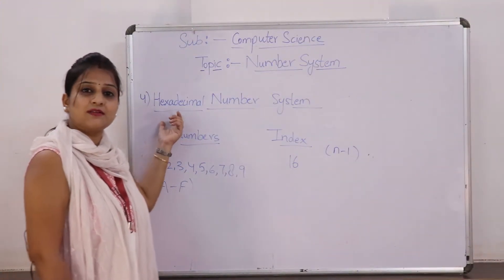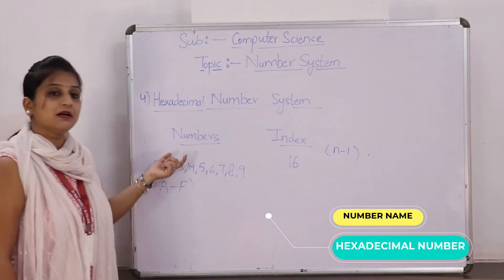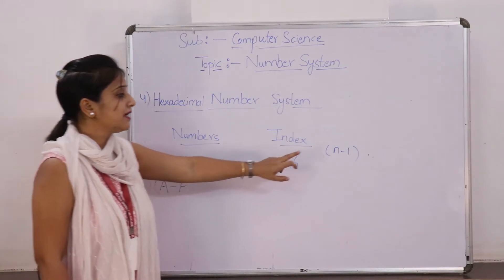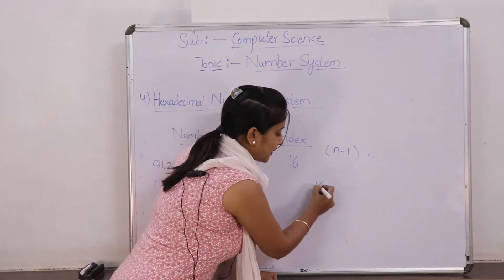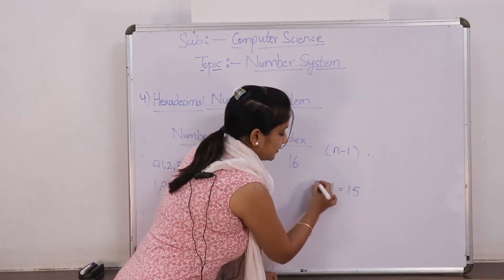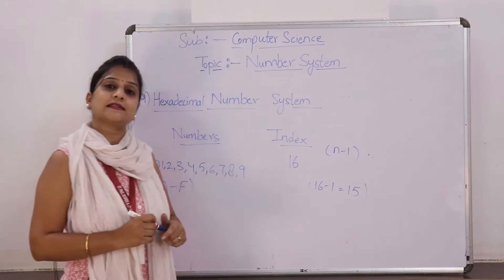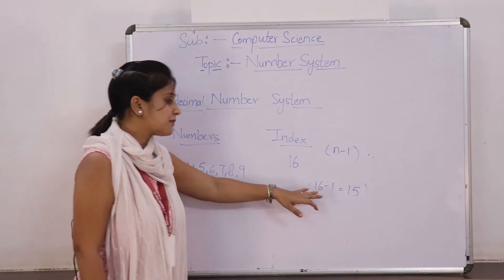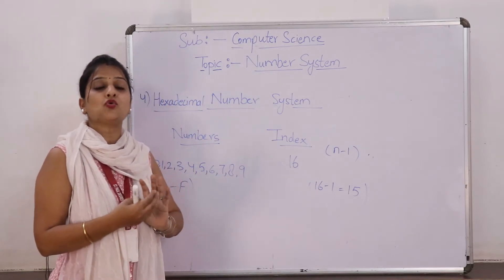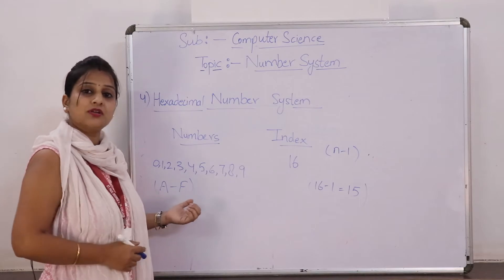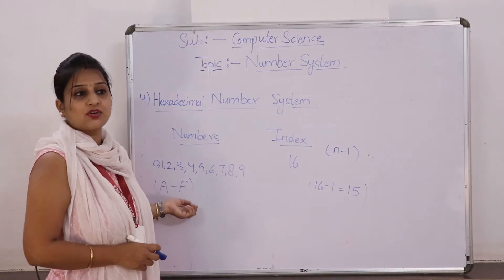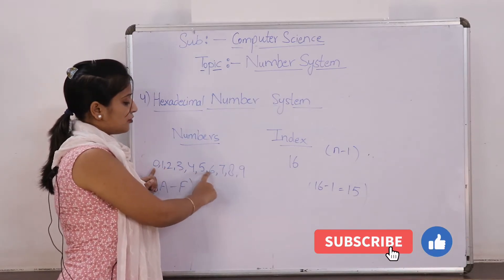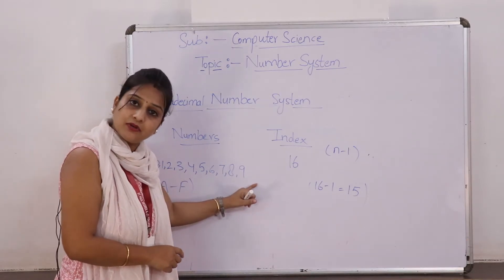The last number system is the hexadecimal number system. Here the index number is 16. Using n-1: 16-1 equals 15. Now the question arises — as we said, we don't have single-digit numbers beyond 0 to 9, so how do we represent numbers 10 to 15? We have a solution: we use characters. From 0 to 9 we have the usual digits.